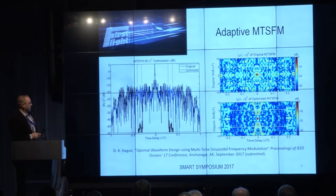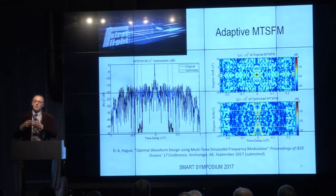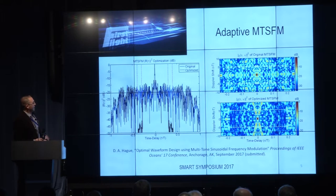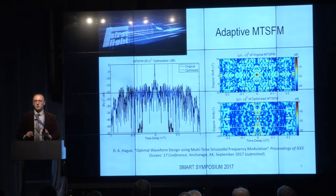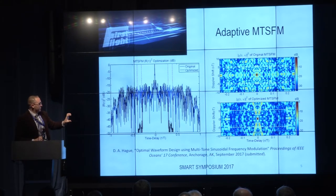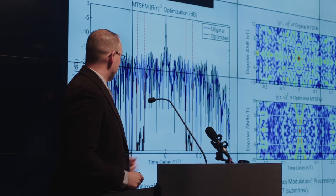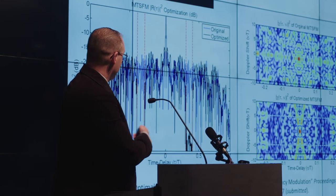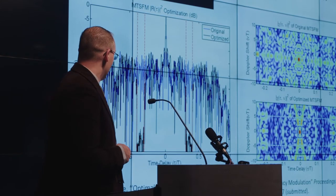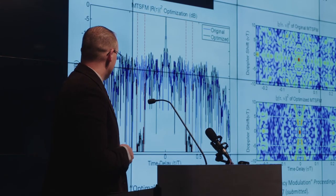In the right panel, I extended that to the ambiguity function, optimizing the shape of a 3D function — which is a bit harder. The white dashed lines denote the region where I wish to reduce the volume of that ambiguity function. The top shows the original and the bottom shows the optimized version. Not only did I reduce that volume, but the main lobe stayed the same — it didn't widen. This work is appearing in a paper I did for IEEE Oceans this fall in Alaska.